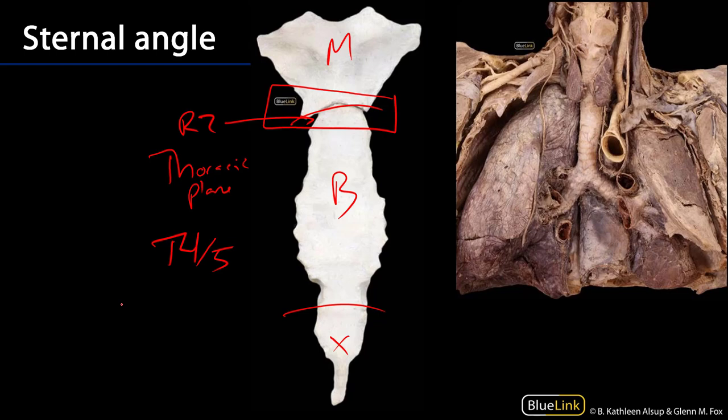That thoracic plane is going to separate the superior mediastinum from the remainder of the mediastina, and will be in the vicinity of the tracheal bifurcation among other structures.